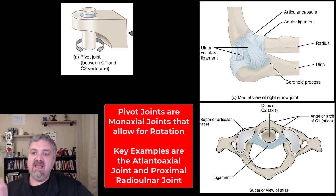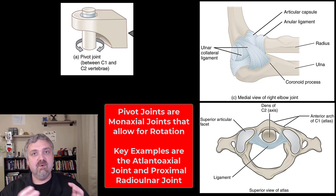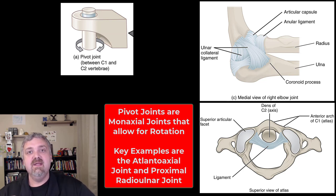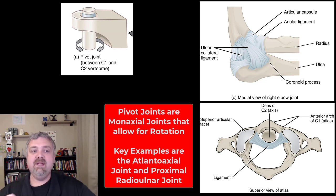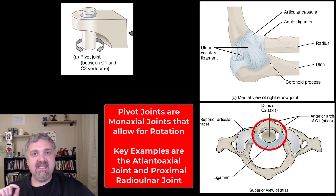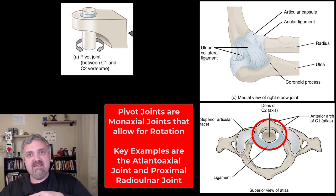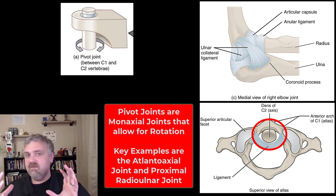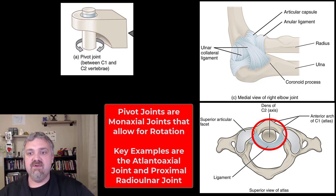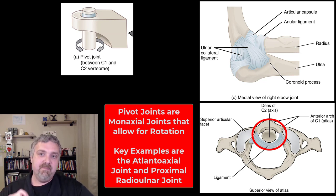First we have the pivot joint, which you'll see here on the left along with some examples. Pivot joints allow for rotation around an axis, so they are monaxial or uniaxial joints — freely movable but only in that one plane. The best example is the atlantoaxial joint. The atlas is C1 and the axis is C2. The dens or odontoid process of C2 comes up inside the atlas, and the transverse ligament holds it in place, allowing for all the rotation that occurs between C1 and C2 in your neck.